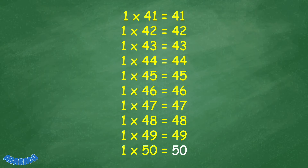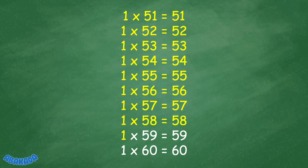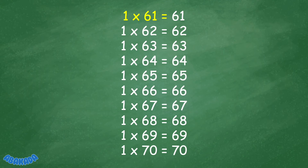1 times 50 equals 50. 1 times 57 equals 57. 1 times 58 equals 58. 1 times 59 equals 59. 1 times 60 equals 60. 1 times 61 equals 61.